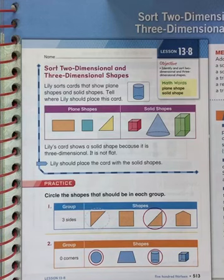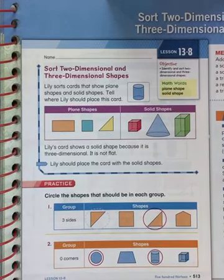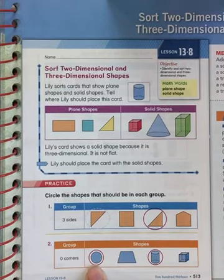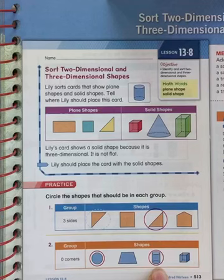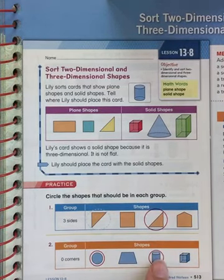Look at number two. Zero corners. A circle has zero corners, and a cylinder has zero corners, so go ahead and circle the circle and the cylinder.